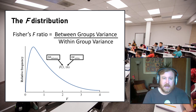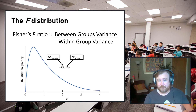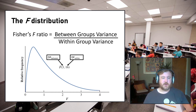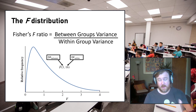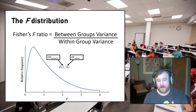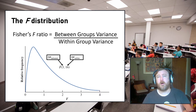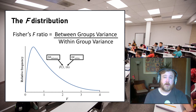Here is a picture of the F distribution — Fisher's F ratio. The shape of this distribution changes based on the degrees of freedom between and the degrees of freedom within. We denote degrees of freedom as F(df_between, df_within) — that is the APA style standard for reporting an F ratio, and you must always report both degrees of freedom.